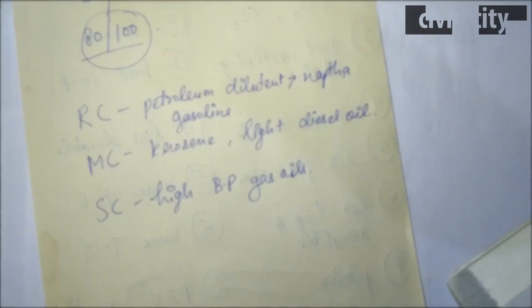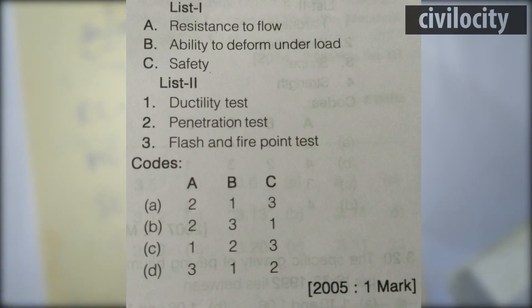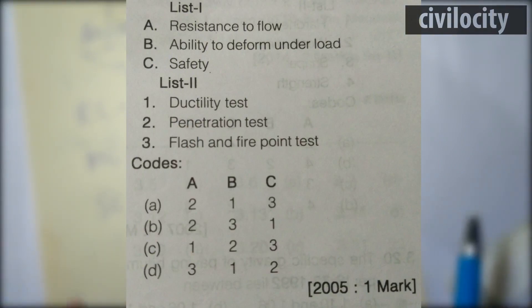You have to match List 1 with the following: A is resistance to flow, B is ability to deform under load.